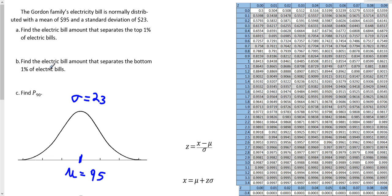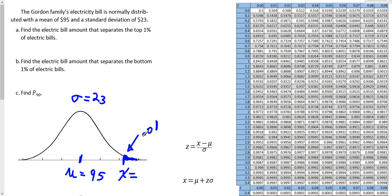The first question says: find the electric bill amount that separates the top 1% of electric bills. So we're looking way up at the right tail and we want to find an X value — an electric bill — that separates the top 1%. The top 1% would be above whatever that X value is, so we want that upper area to be 1%, or 0.01.